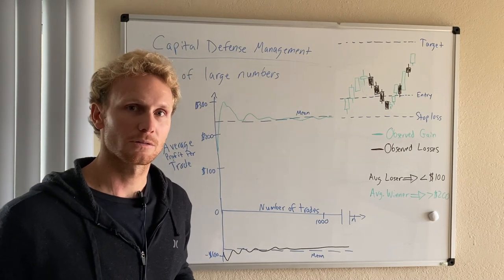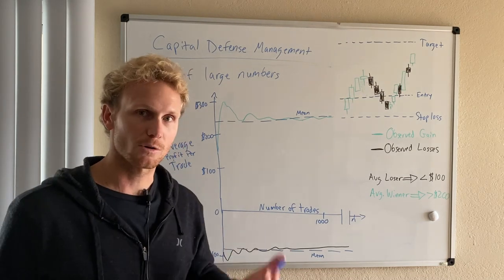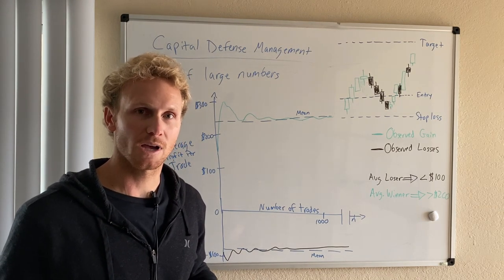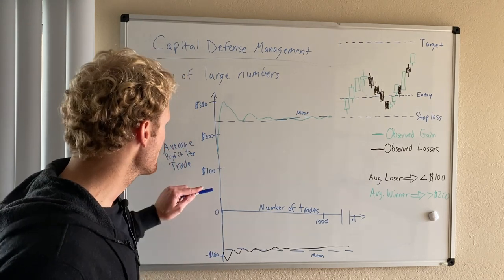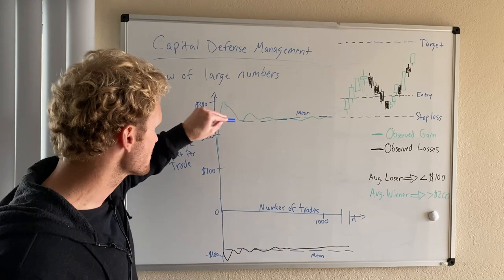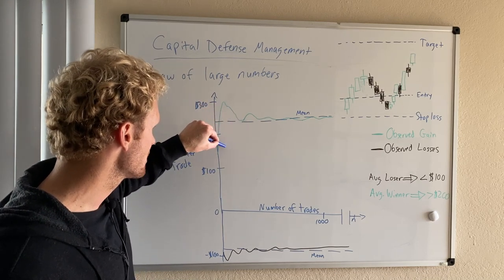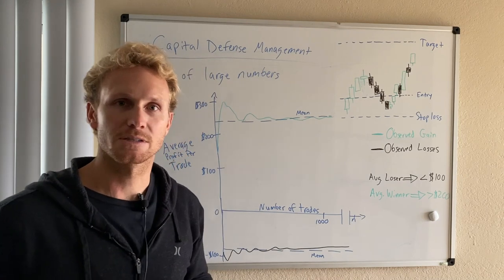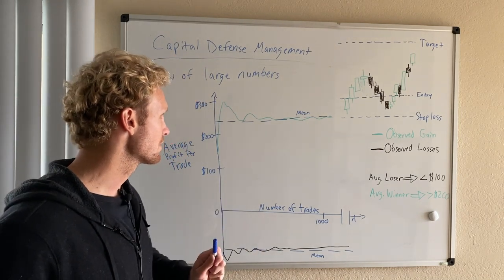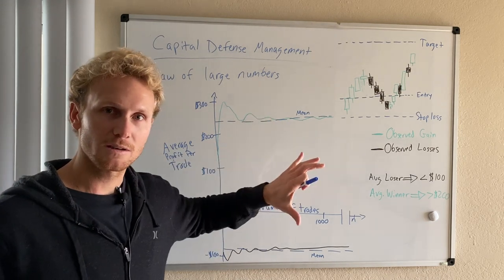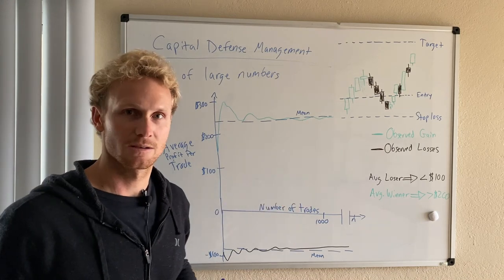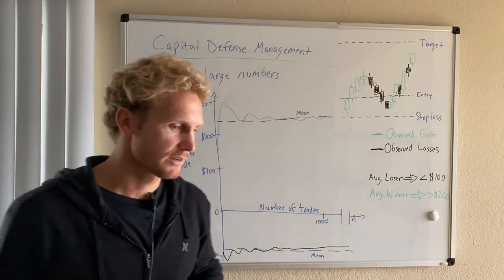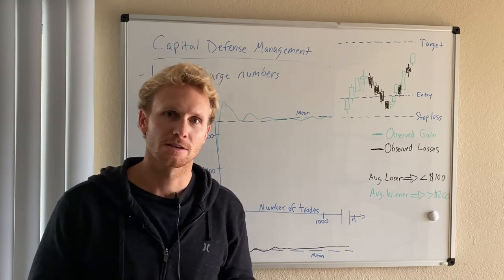If we keep our losses over the long term — over a thousand-plus trades — to less than a hundred dollars per trade, that means we have an average loser of less than a hundred bucks and an average winner of greater than two hundred dollars. That's over a two-to-one risk-reward ratio. For every hundred bucks we risk, we make two times that. Over the long term, if you maintain this consistency, stick to your plan, set your trades, wait for your targets, adhere to your stop loss, and maintain a win rate over 50%, you will be profitable in the long term.